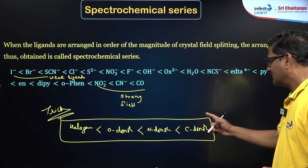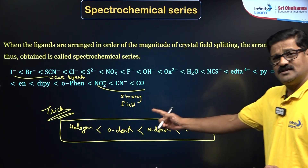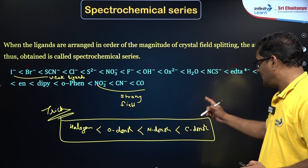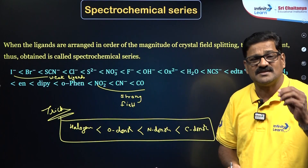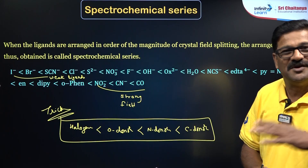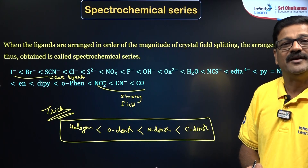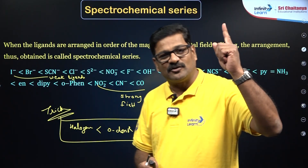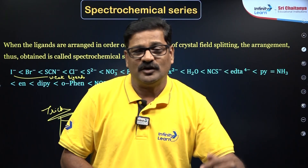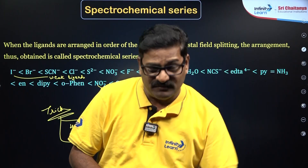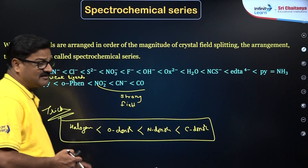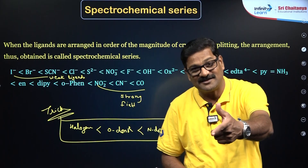So: halogen < oxygen < nitrogen < carbon in terms of ligand strength. The strength of the ligand is inversely proportional to the electronegativity of the donor atom. The more electronegative the donor atom of the ligand, the weaker the ligand. That is a simple and awesome trick you can also find in NCERT.